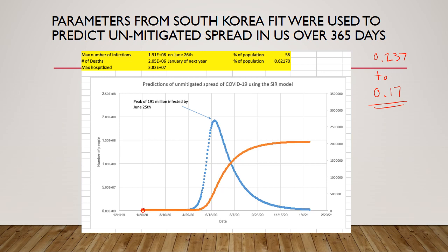We have already begun to do things — we've enacted social distancing, canceled classes, and people are teleworking. But the orange curve represents the number of deaths. If we did nothing and just let this circulate freely, we would expect 58% of our population to be infected with the coronavirus, and by the end of January 2021 we would anticipate around 2 million deaths. If 20% of the infected actually go to the hospital, we would have on the order of 38 million people needing hospital care, which would overwhelm our medical system.